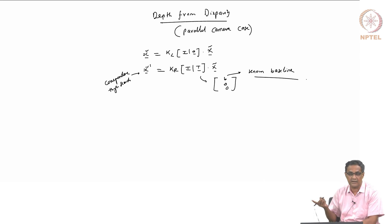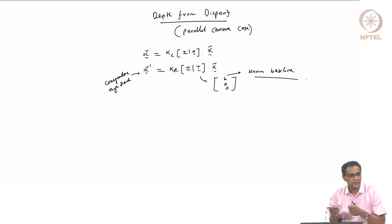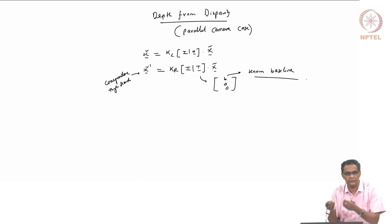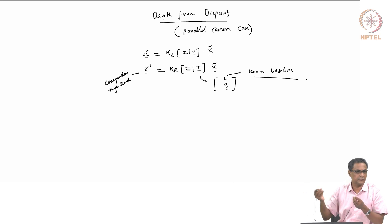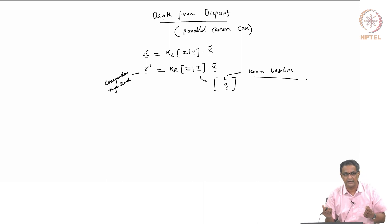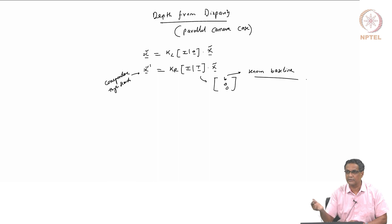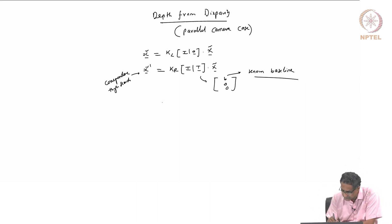In the next class when I talk about structure from motion, some of these things are not known. I know it is a parallel camera setup but I do not know the actual baseline spacing. I can find out it is parallel through the fundamental matrix — the epipole is at infinity — but I do not know the exact baseline. That is what structure from motion addresses, where camera poses are not known. This is the simpler case where everything is given.